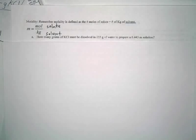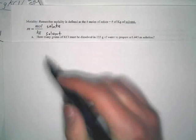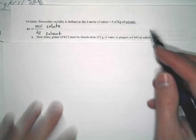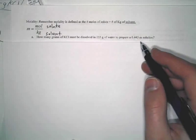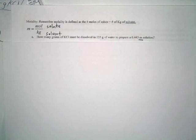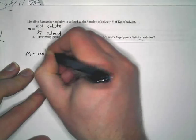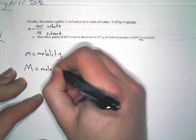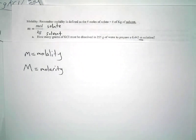The key being that the moles of solute is pretty easy to figure out, the kilograms of solvent is easy to figure out. The challenge is simply identifying what's what. So if we look at this, how many grams of KCl must be dissolved in 255 grams of water to prepare a 0.445 molal solution? Remember that little m represents molality. So you might want to make a little note of that, that little m is molality and big M is equal to molarity. There is a difference, you have to know the difference.